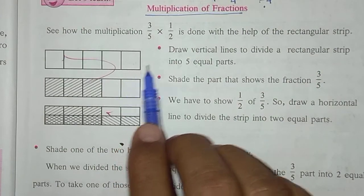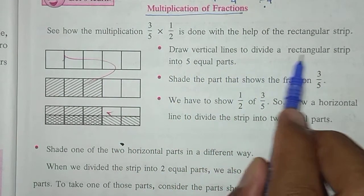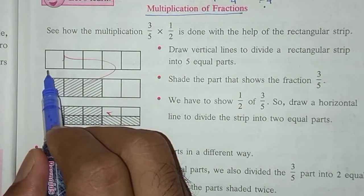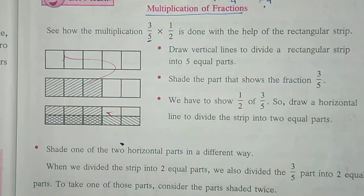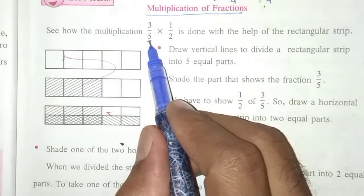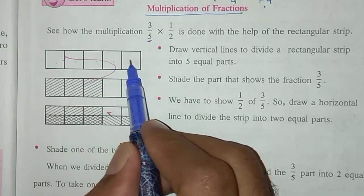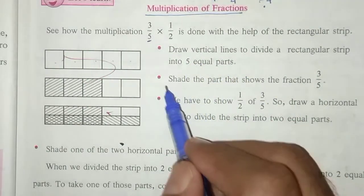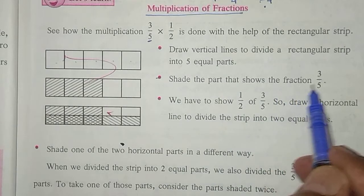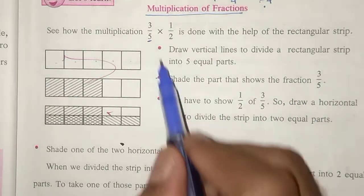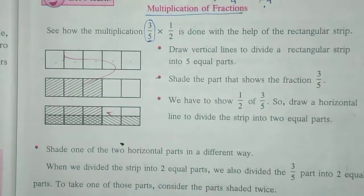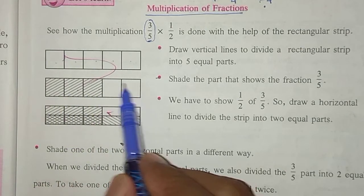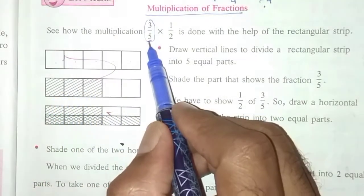So what to do first: draw vertical lines to divide the rectangular strip into 5 equal parts. One rectangular strip is taken. What is the first fraction? What is the denominator in that? 5. So to make total 5 parts of the strip. Then point 2: share the part that shows the fraction 3/5. The meaning of 3/5 is: out of total 5 parts, 3 parts are made dark. That is the meaning of 3/5.